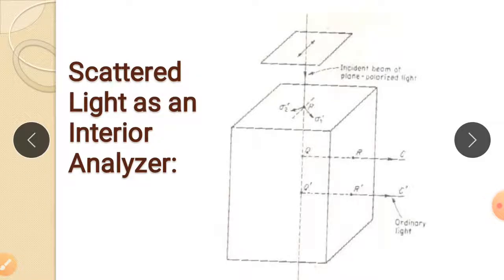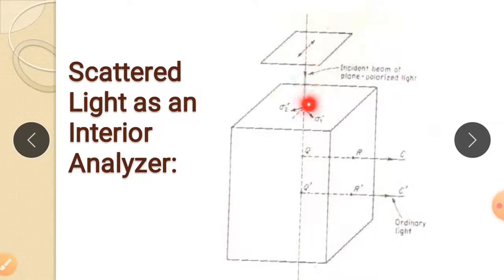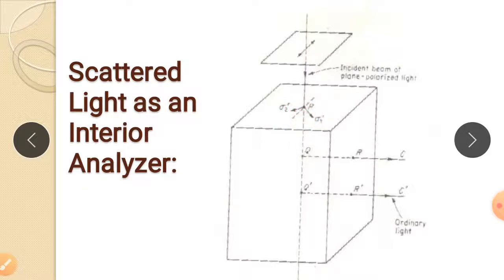Next is the scattered light as an interior analyzer. Unlike the previous case, here the incident beam is plane polarized light — it is polarized at the entrance by a polarizer before falling on the model. When this polarized light falls on point P in the model, it gets scattered. Point P acts as the analyzer since the scattered light aligns with the secondary principal stresses Sigma 1' and Sigma 2'.